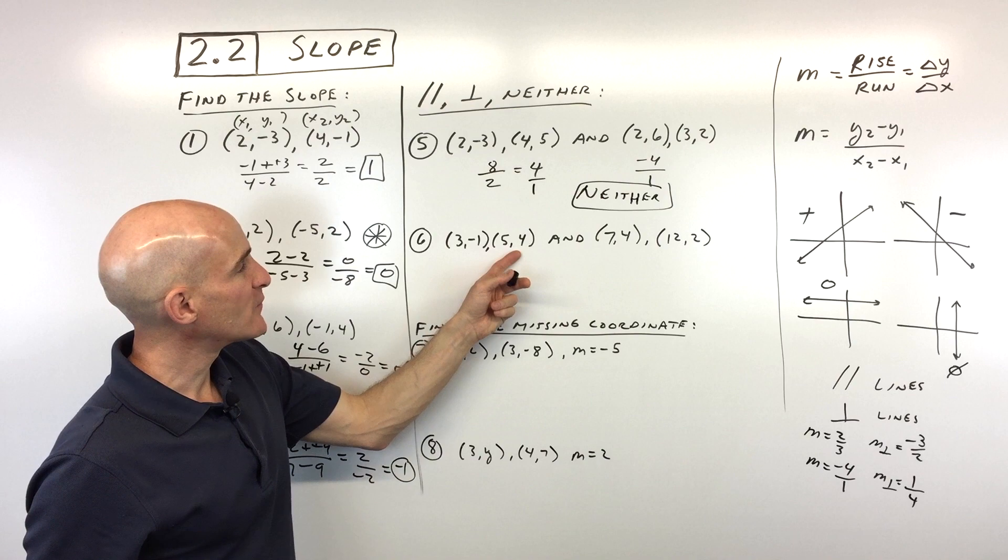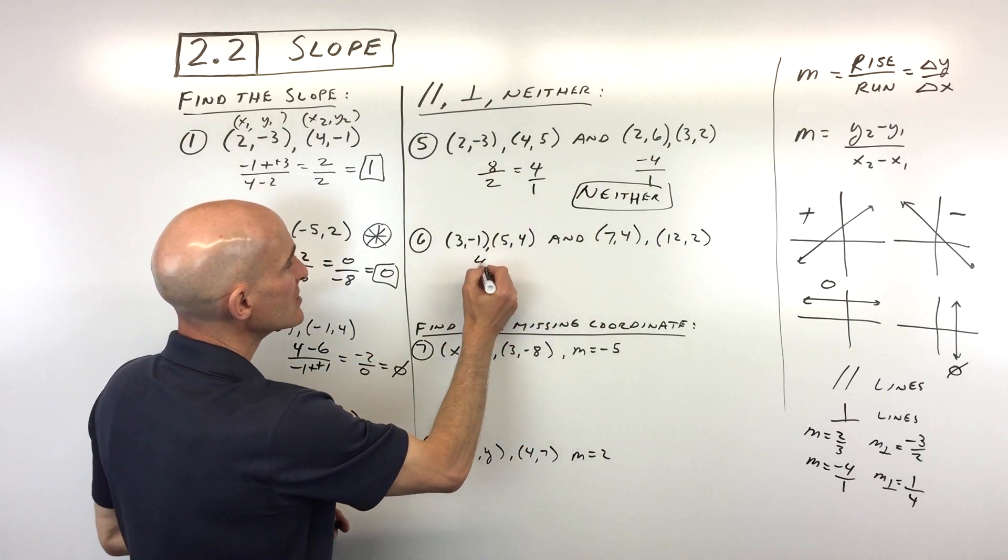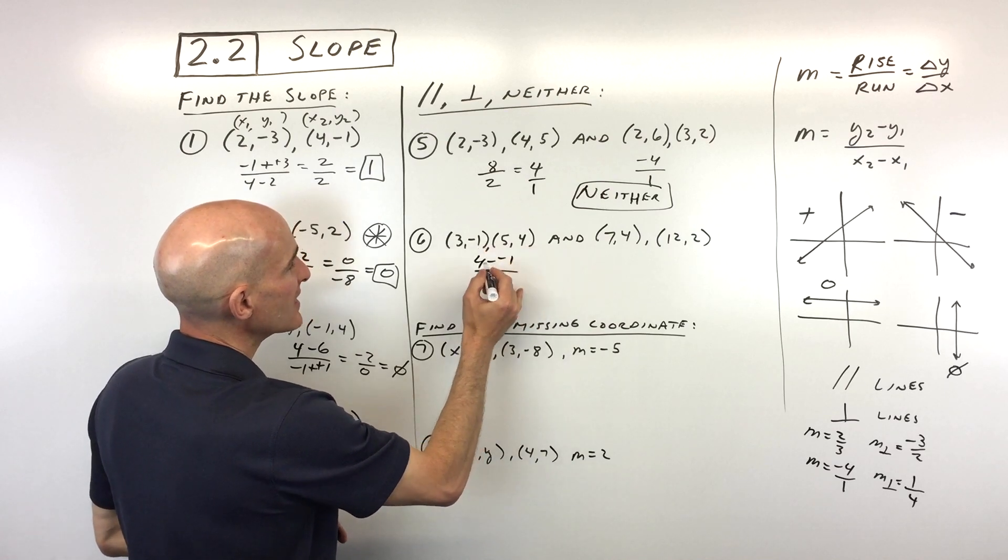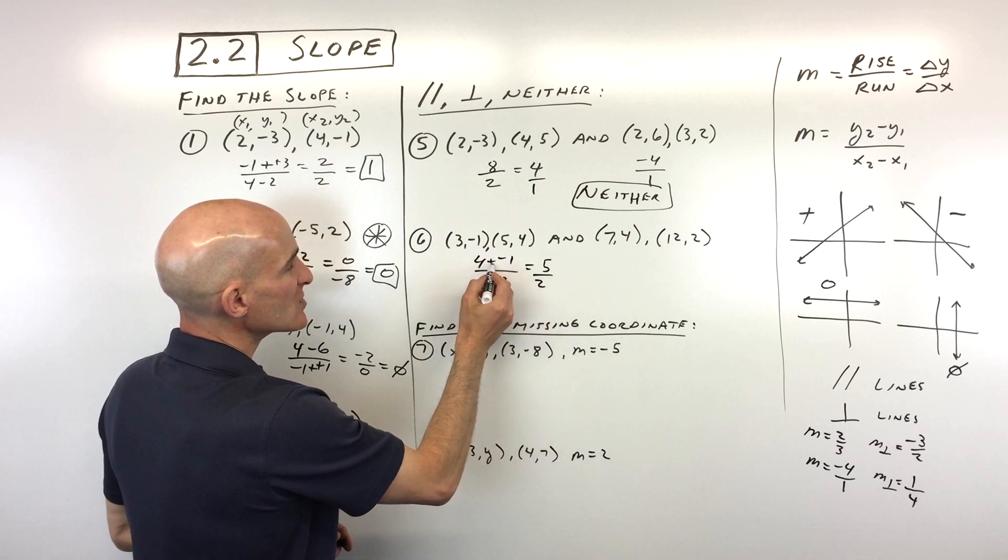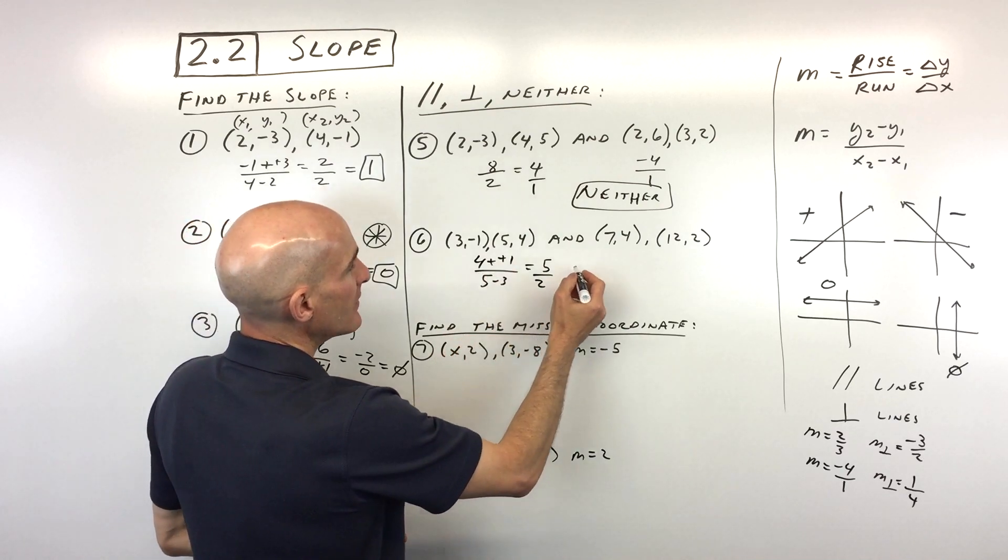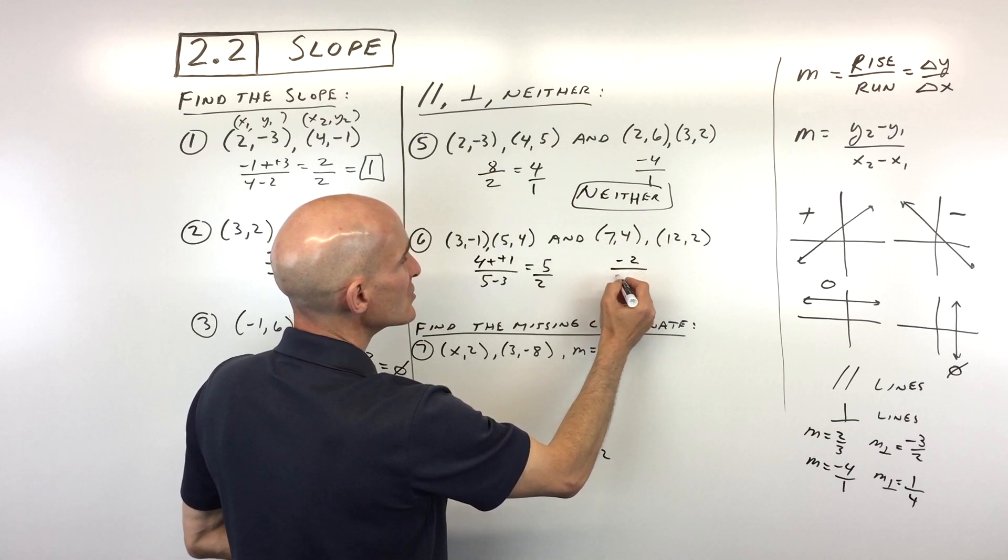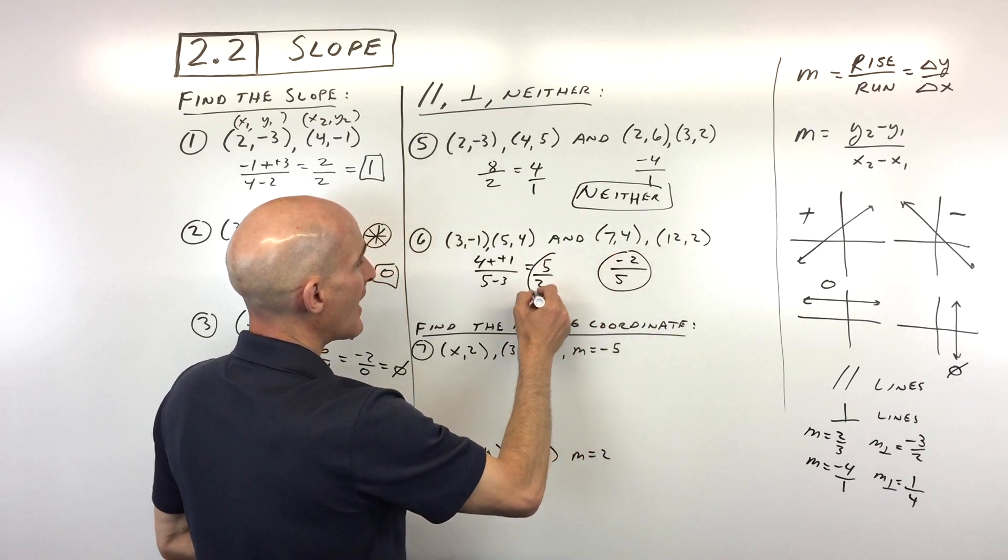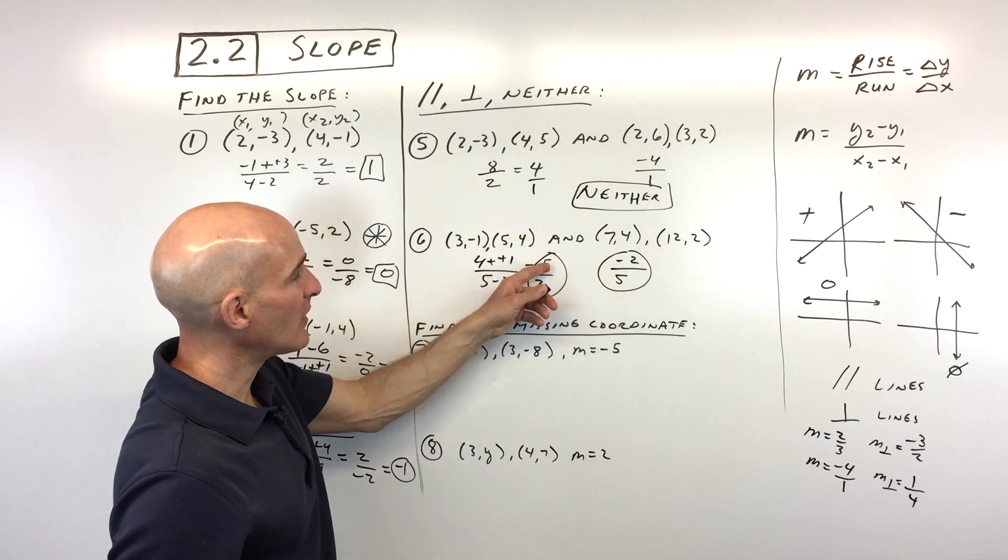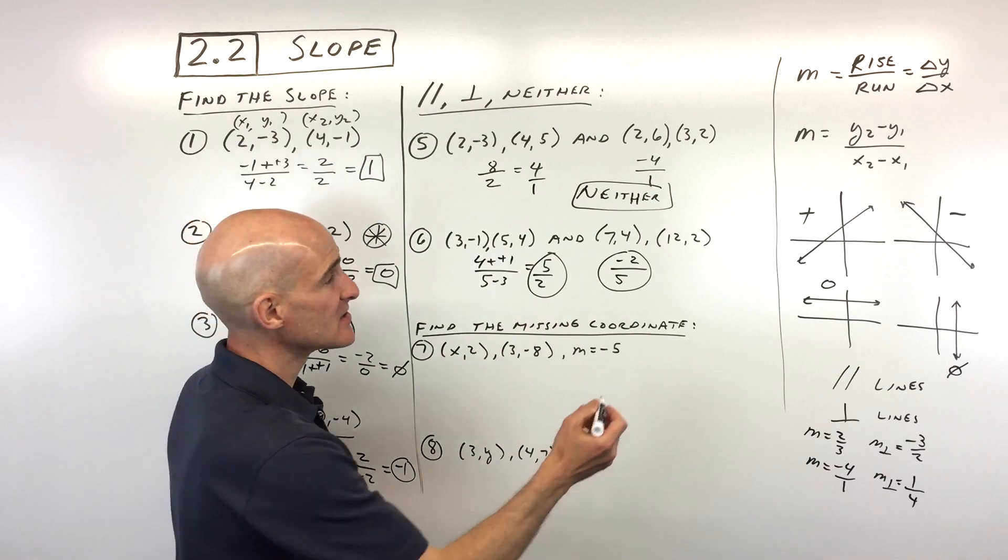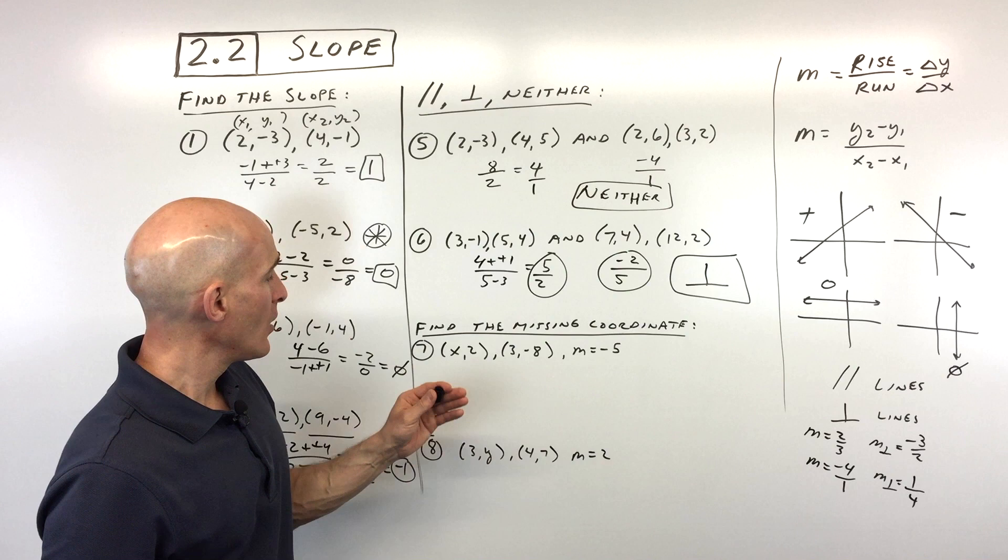So try the next one. You've got these two points that form a line. These two points form a line. Are they parallel, perpendicular, or neither? So let's do our slope formula. 4 minus -1 over 5 minus 3. So this comes out to 5 over 2. Remember, when you subtract, it's like adding the opposite. And then over here, we've got 2 minus 4, which is -2, over 12 minus 7, which is 5. So look what we have here. We've got 5 over 2, -2 over 5. So it's the reciprocal and the sign is the opposite. That means that these are perpendicular lines. Okay, they're going to form a right angle, a 90 degree angle.